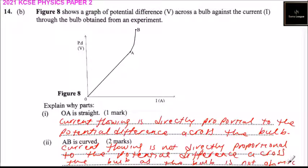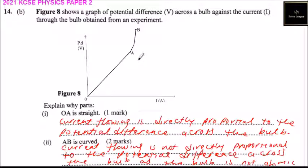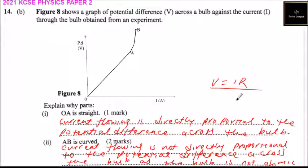Ohmic means obeying Ohm's law. From A to B it is not obeying Ohm's law. Ohm's law states that the current through a conductor between two points is directly proportional to the voltage across it, giving the formula V equals IR. That's how you answer that question and you should get the three marks.